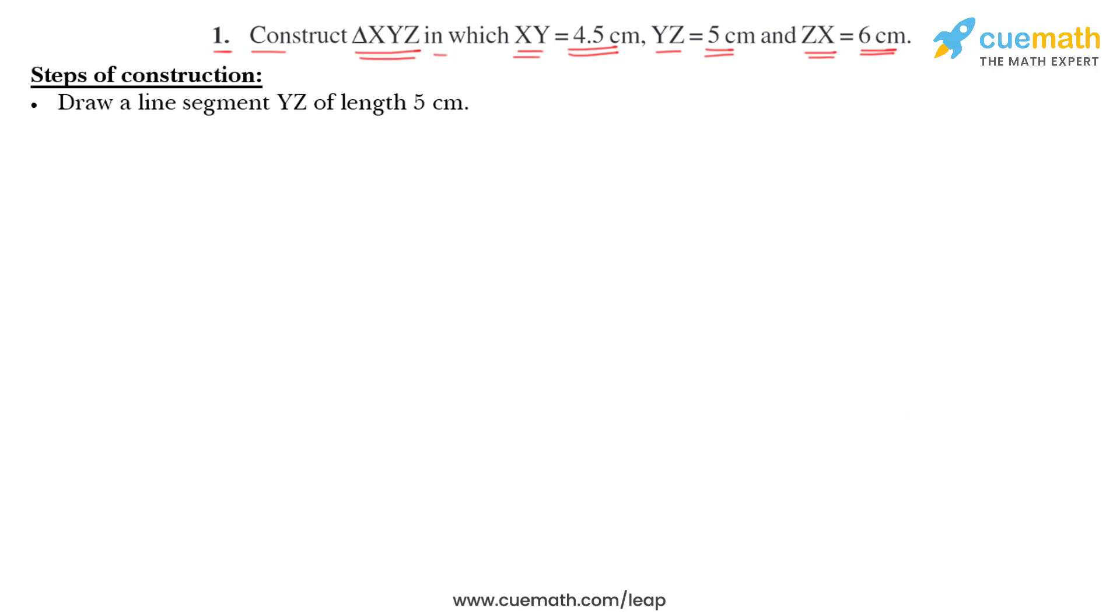First step, draw a line segment YZ of length 5 cm. We start with what they have given. They have given that YZ should be 5 cm. So, let us draw a line segment whose length is 5 cm, YZ. Mark the endpoints. This is Y, this is Z and the length is 5 cm.